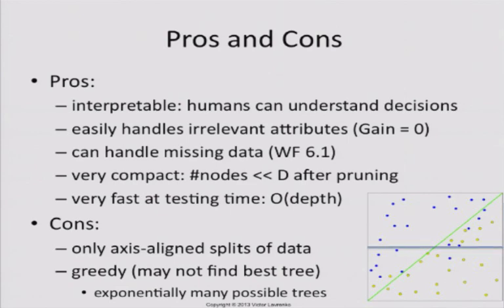What decision trees will do is introduce thresholds on each axis individually. They'll put a threshold creating one subset, then another subset. But those subsets can be impure, so it starts splitting again. You can only draw vertical lines and horizontal lines — that's what happens when you consider one attribute at a time. So it'll keep splitting and splitting, and overall it'll take a while to get the same separation that a regression algorithm or even Naive Bayes could get very quickly.